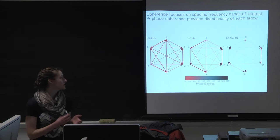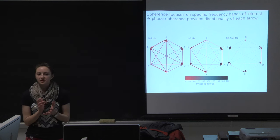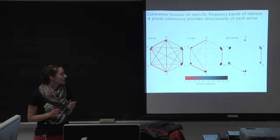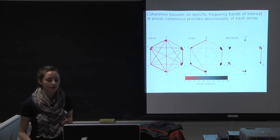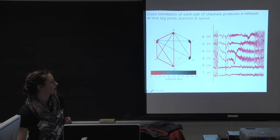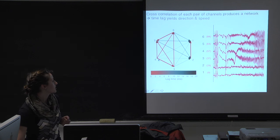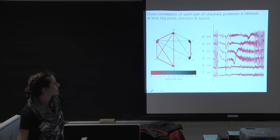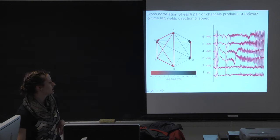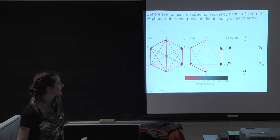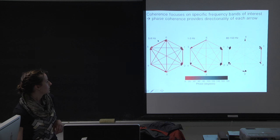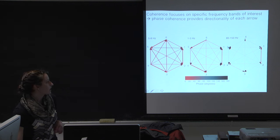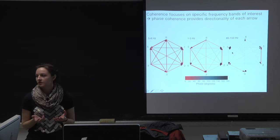Doing coherence analysis gives something different depending on the frequency band. In the theta frequency band, the network looks extremely similar to the cross-correlation network — because seizure activity is the highest amplitude component in the signal. Channels four and three, where the seizure starts, tend to have many outputs, as expected, whereas channels one and two tend to have mostly inputs, and the seizure does indeed start later in those channels. If we look at a delta band or very high gamma, we get very different looking networks, which could be interesting depending on what you're looking for.